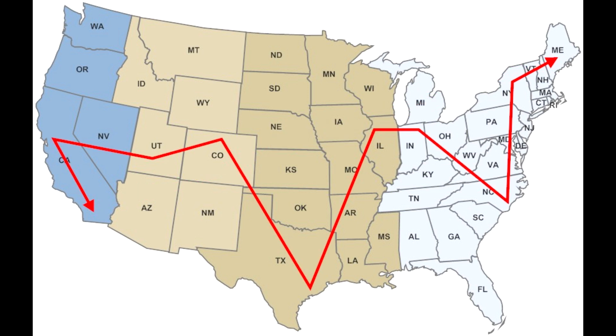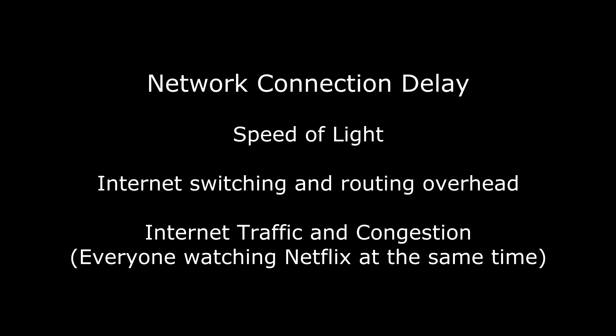However, the actual route the data takes on its way from San Diego to Maine and back may be anything but a straight line. Because of internet routing, the actual distance the packets travel could be twice the physical distance or more, all adding additional delay just because of the speed of light. On top of distance and speed of light issues, there may be additional delay added from internet switching overhead, buffering, traffic congestion, quality of service prioritization, and other factors. These are generally factors you have no control over but need to be aware of.